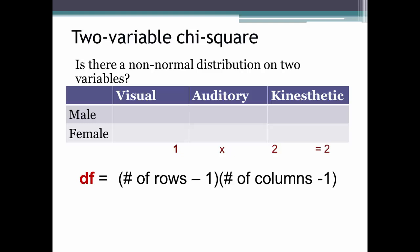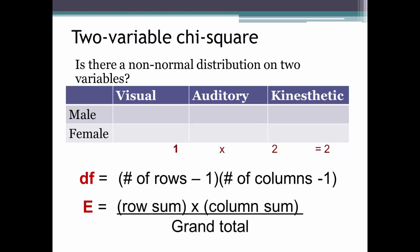The next part is to calculate the expected values. The underlying concept is the same as the one-variable chi-square, but the calculation is a bit trickier. Here you take the row sum and multiply it by the column sum, and then divide that product by the grand total.